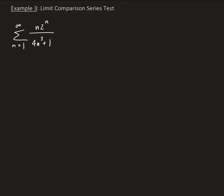So on the top, in the numerator, we have n times 2 to the n. On the bottom, we have 4n cubed and 1.